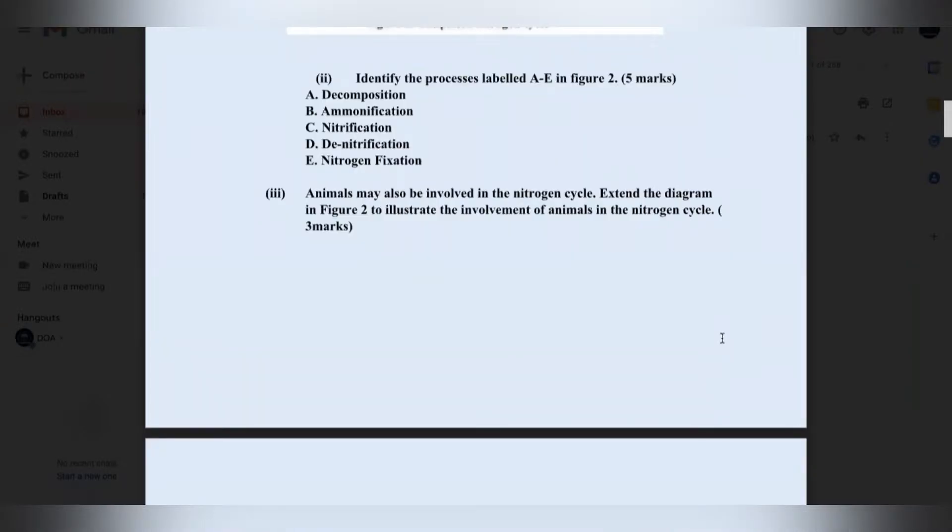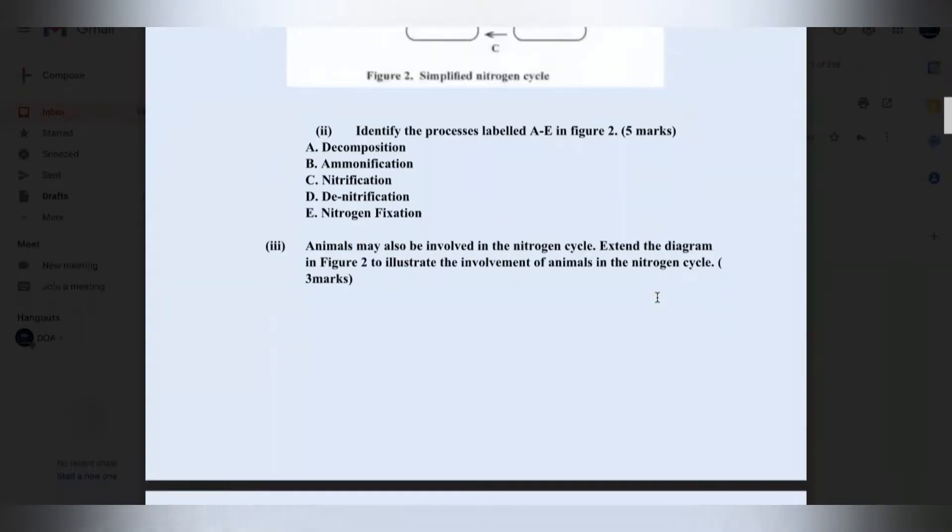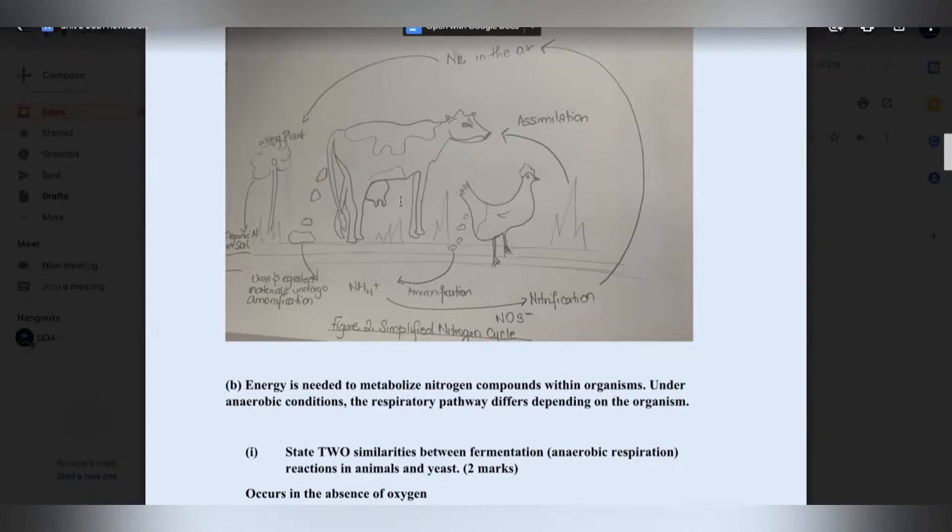Part three, animals may also be involved in the nitrogen cycle. Extend the diagram in figure two to illustrate the involvement of animals in the nitrogen cycle. So here is my drawing. And this is my cow. Her name is Molly. And this is her friend, Chikina. And as you can see in this nitrogen cycle, Molly and Chikina, they are very important because they're extracting waste. And these waste can be transformed into ammonia, which can be transformed into nitrates. And also, when you are producing a drawing, ensure to place a title there. The title is worth one mark. So for drawings, titles go below the figure.